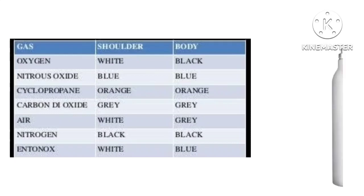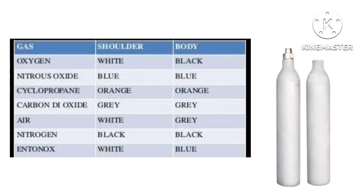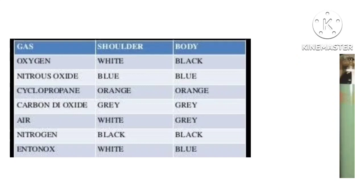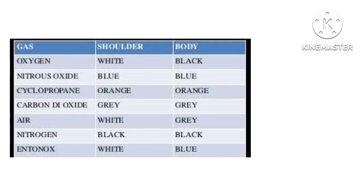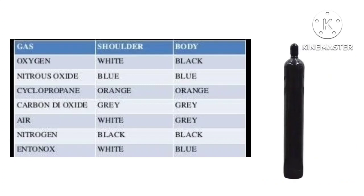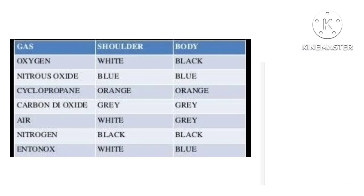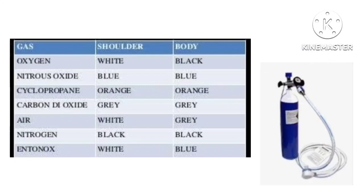Carbon dioxide cylinders have a grey color, which are used mostly in laparoscopic surgery. Air cylinders have a white shoulder and grey body. Nitrogen cylinder color is completely black, and Entonox has a white shoulder and blue body.